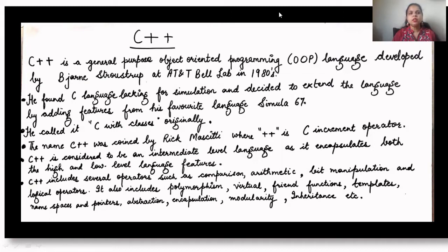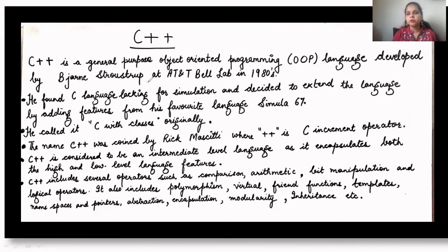C++ is a general purpose object-oriented programming language. It is also referred to as the OOP language. It was developed by Bjarne Stroustrup at his lab established at AT&T Bell Labs in the 1980s. He found that the C language was lacking. Initially the C language had lacked efficiency in the areas of simulation and many other fields.